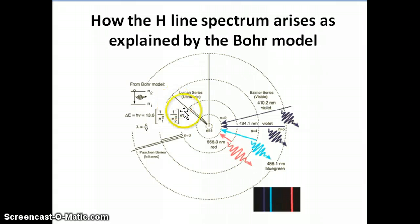If you have transitions going to the first orbit, that's called the Lyman series. The transition that goes to the second orbit is called the Balmer series, and that's what results in the visible lines that we see with our naked eyes.